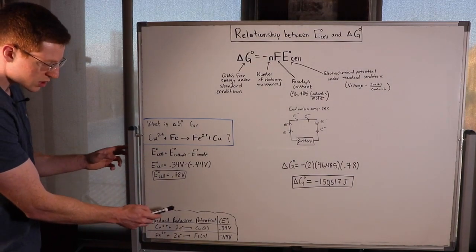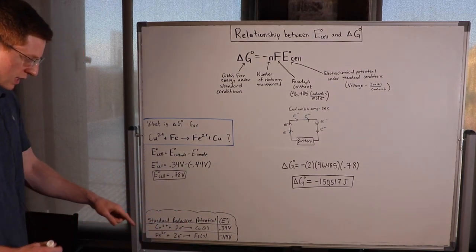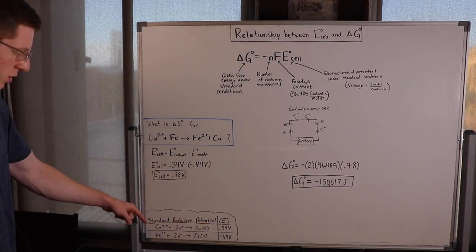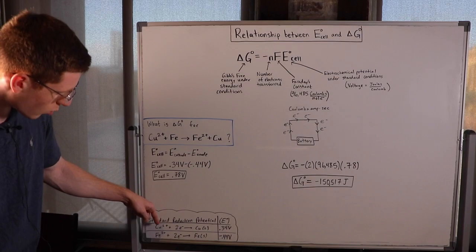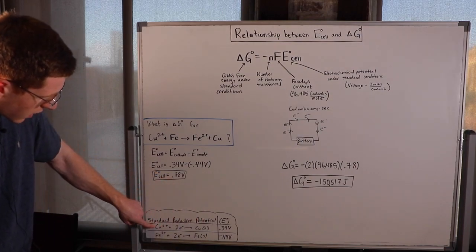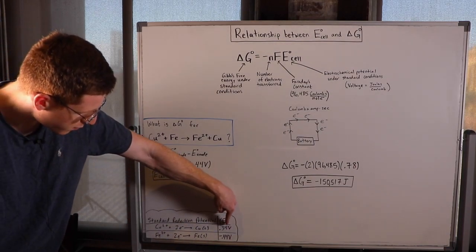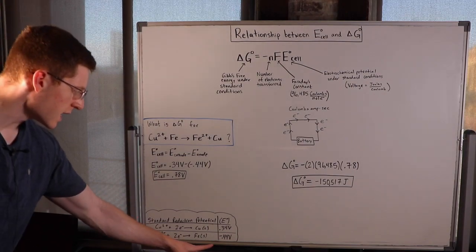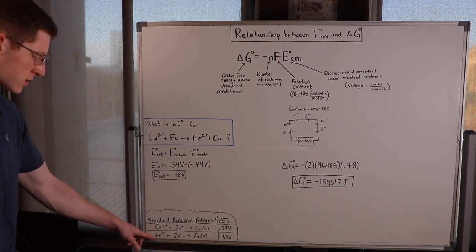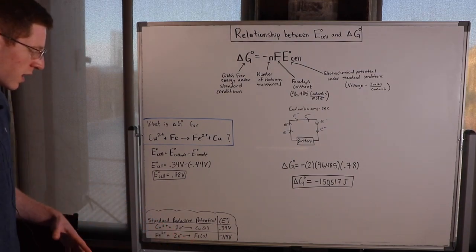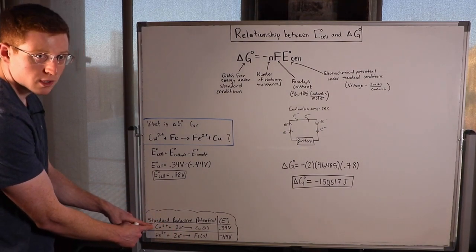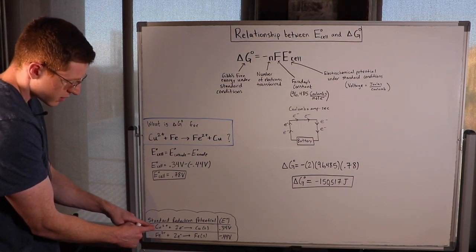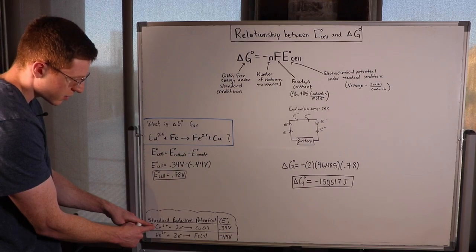But how do we know which element is the cathode and which is the anode? Well, we have to look at the standard reduction potentials. And you see here that the more positive the standard reduction potential, the more likely it is to want to be reduced. So you can see copper has positive 0.34 volts associated with its reduction, while iron has a negative 0.44 volts associated with its reduction. So that means copper is going to be the one that wants to be reduced here, while iron is going to be the one that wants to be oxidized. So that means copper is going to be at our cathode.